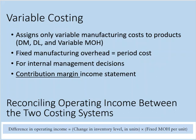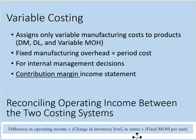For manufacturers, the two costing systems will yield different results for operating income when inventory levels increase or decrease. Managers can easily reconcile the difference between the two income figures using this formula: take the change in inventory levels in units and multiply that by the fixed overhead per unit.